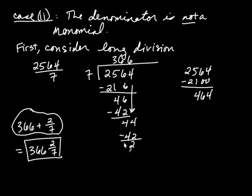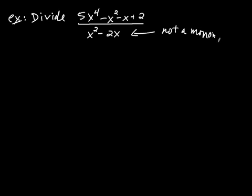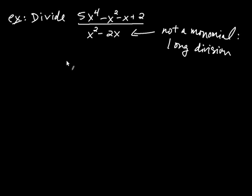With that in mind, we're going to handle case 2, dividing two polynomials where the denominator is not a monomial. We're going to use what's called long division for polynomials. We're going to divide 5x to the fourth minus x squared minus x plus 2, divided by x squared minus 2x. The denominator is not a monomial, so we're not in case 1 — we use long division.